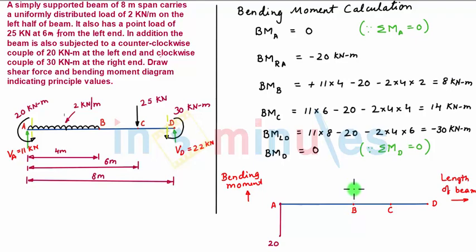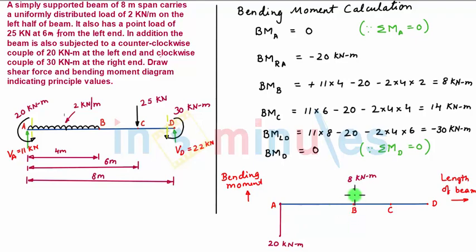At point B, with a suitable scale, we plot bending moment of 8 kilonewton meter. Now we have to connect these two points. To see how the bending moment varies between point A and B, we check the loading diagram. Since between A and B there is a UDL acting, the variation of bending moment between these two points will be a parabolic curve.